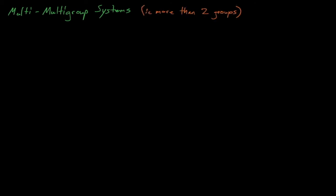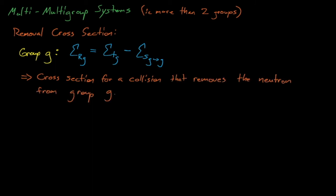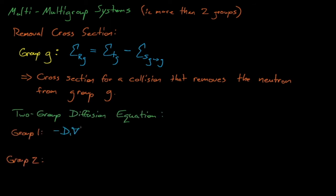We will finish the material for today by discussing multigroup problems where we have more than just two groups. Before we dive into a generalized description of multigroup systems, it's convenient to define the removal cross-section. For an arbitrary group G, the removal cross-section is simply equal to the total cross-section for group G minus the cross-section for neutrons to scatter into that same group. In other words, the removal cross-section is the cross-section for events that will remove the neutron from group G, either by absorption or by out-scattering into a different group.